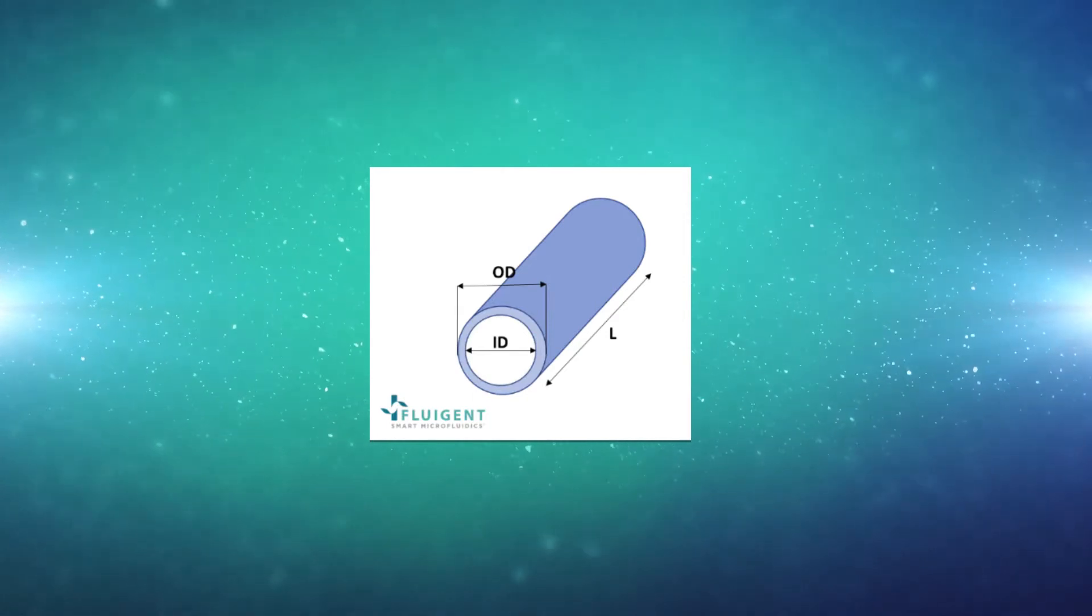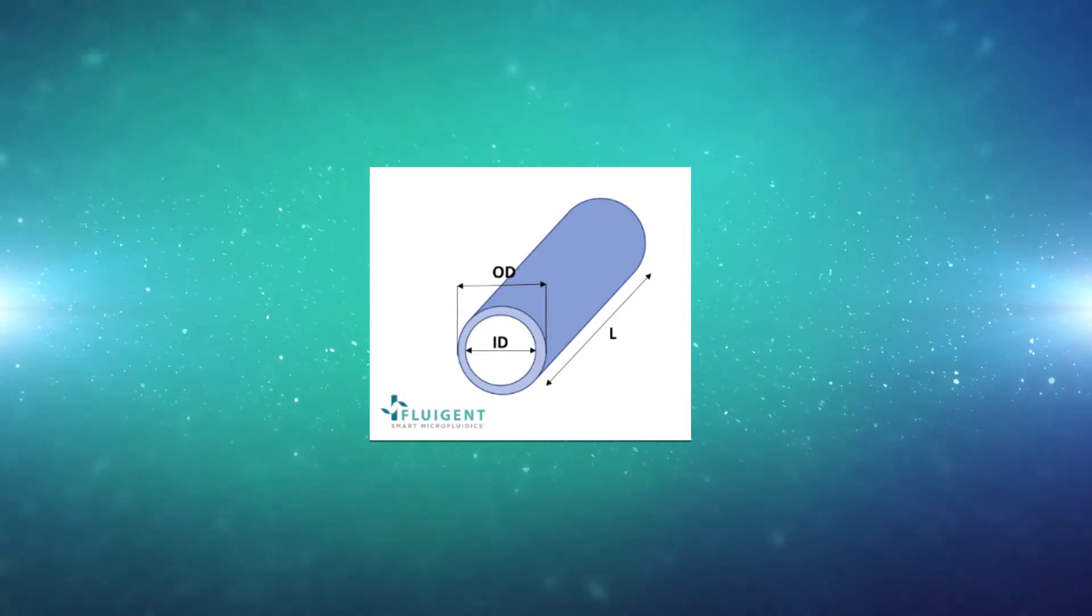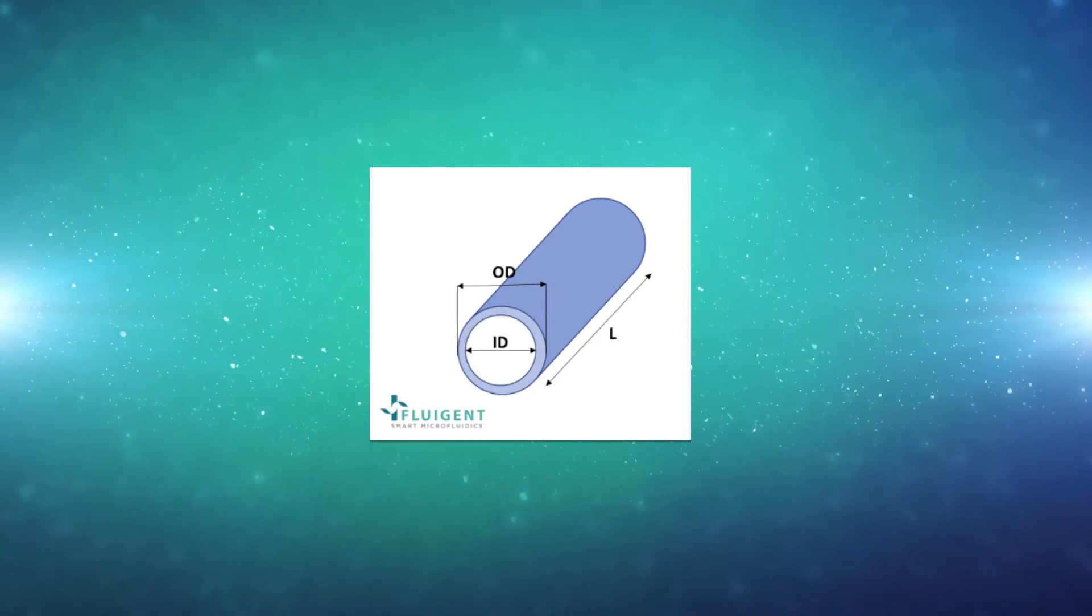Usually the tubing is made as short as possible to have smaller internal volumes, the internal volume of the tubing being the intersection times the length of the tubing. It is also a parameter that takes part in the resistivity of the tubing.